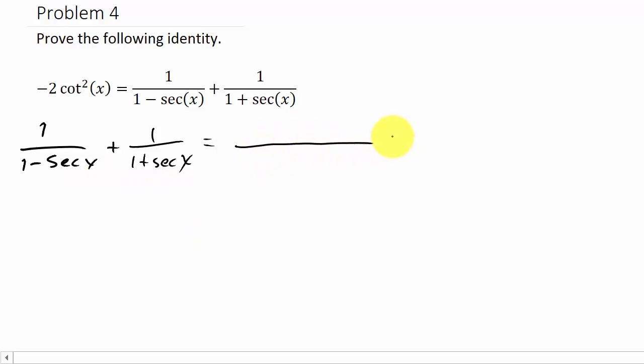All right, so let's get a common denominator, so that's one minus secant x times one plus secant x. We've got a common denominator, so hopefully you remember how to add these fractions. Just to review, you can see this denominator here I have a one minus secant, so what I have to multiply to this to get my common denominator is one plus secant. So one times one plus secant x is one plus secant x.